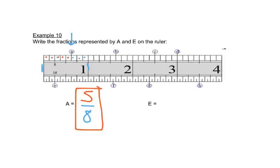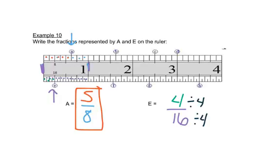For point E, we again count spaces between 0 and 1: there are 16 spaces, so our denominator is 16. Point E is 4 spaces over, giving 4 over 16. We can divide both by 4: 4 divided by 4 is 1, and 16 divided by 4 is 4. So E is 1 fourth of an inch.